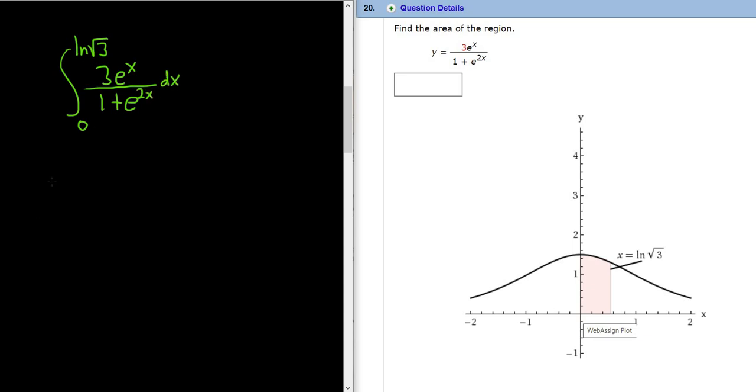To integrate this, we have to rewrite it in a way that allows us to use a familiar formula. So watch, I'm going to rewrite it as follows: 0 to the natural log square root of 3, 3e^x over, write the bottom pieces, 1 plus e^x parentheses squared dx.